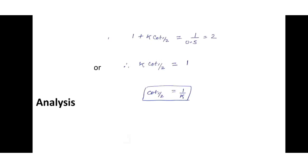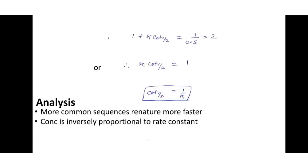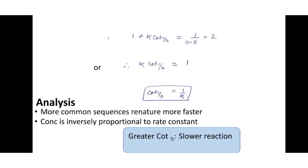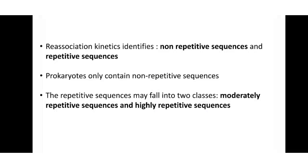Since Cot half is the product of concentration and time required to proceed halfway, a greater Cot half implies a slower reaction. During re-association, single-stranded DNA finds its complement; common sequences re-nature faster than rare sequences. Therefore, re-association kinetics is faster in repetitive DNA sequences. The concentration is inversely proportional to the rate constant: a greater Cot half means a slower reaction, and a lesser Cot half means a faster reaction.